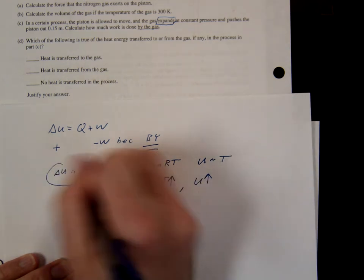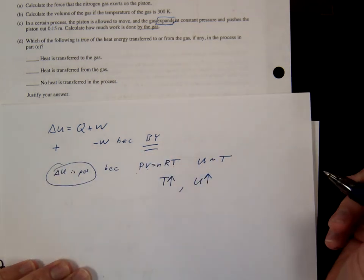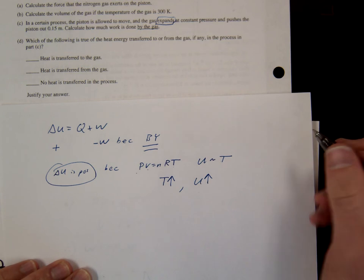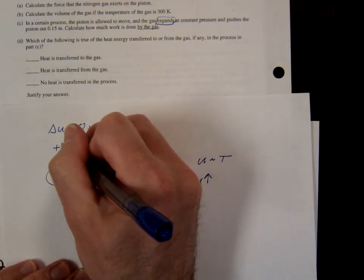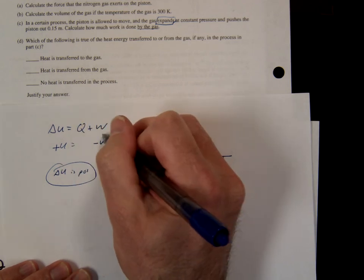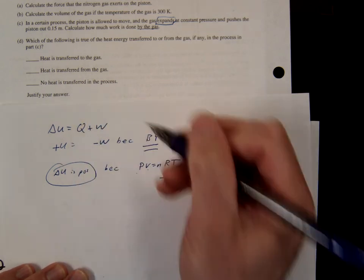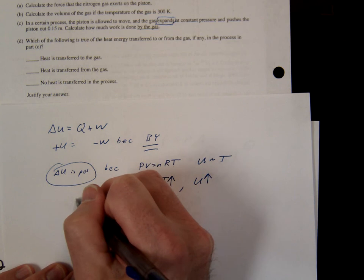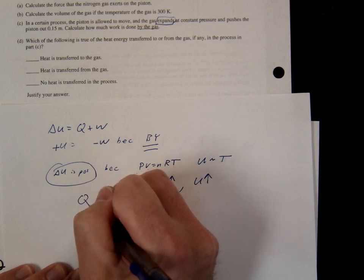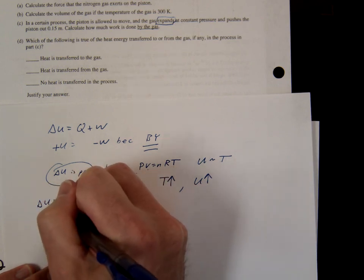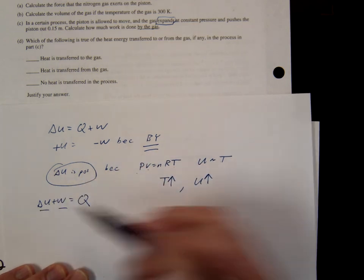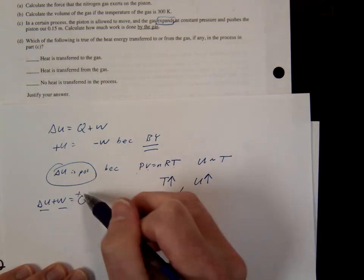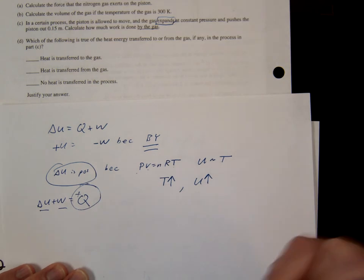Therefore, delta U is positive. So that should be kind of your explanation as you're going through this. So now back to this. Since delta U is positive and W is negative, notice what happens. What does Q have to be? So you have delta U. You end up with delta U plus W equals Q. And so what happens? Well, Q has to be positive, therefore. So you would say heat is added. That's the answer. Heat is added.